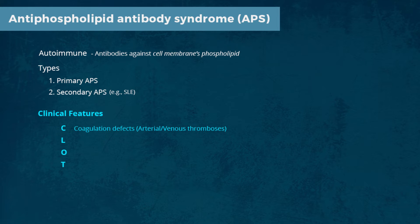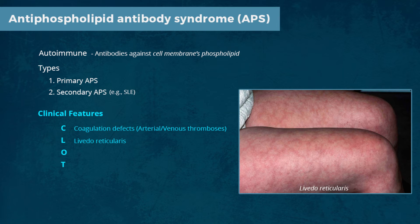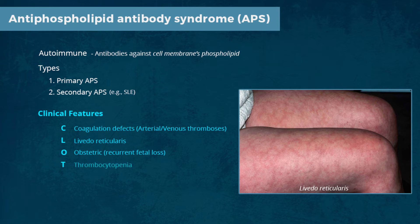These thrombotic events are usually unprovoked and affect cerebral, renal, and other vessels. L stands for livedo reticularis. O is for obstetric complications, such as recurrent abortions and miscarriages. T stands for thrombocytopenia.